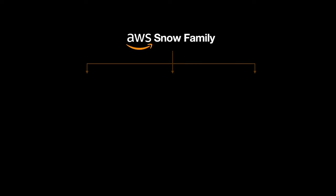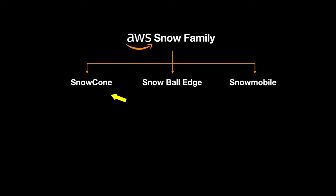AWS Snow Family provides three different types of physical devices. The first is AWS Snowcone, a small device that comes in both HDD and SSD variants with 8 terabyte and 14 terabyte storage options. These devices are typically not used as a single unit for most transfer requirements. Customers needing around 50 to 60 terabytes often use multiple units, especially when their main constraint is a very slow internet connection. This is the smallest variant of the AWS Snow Family.